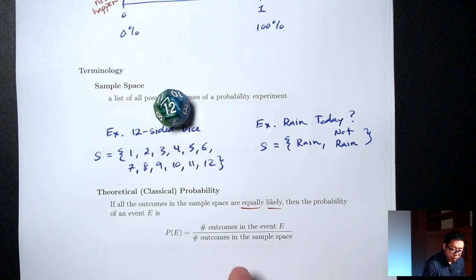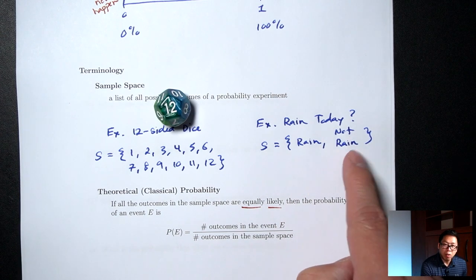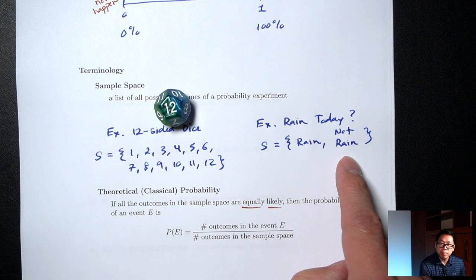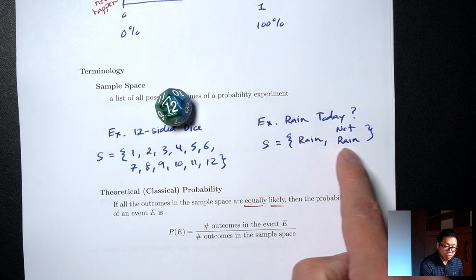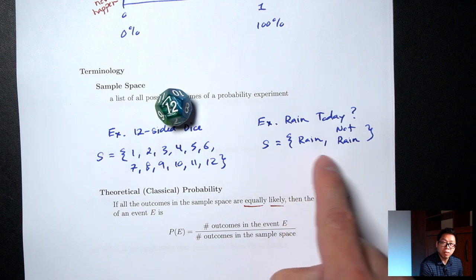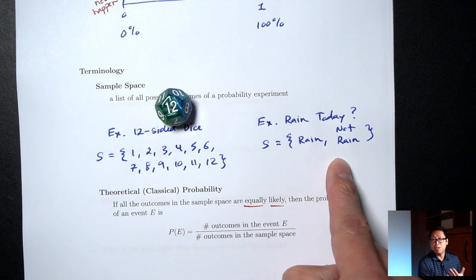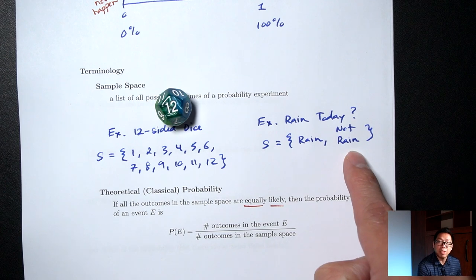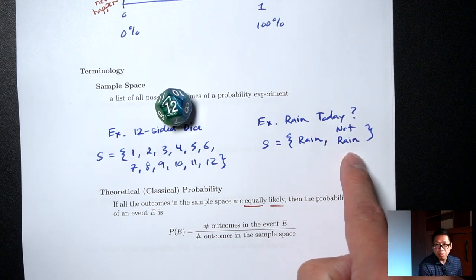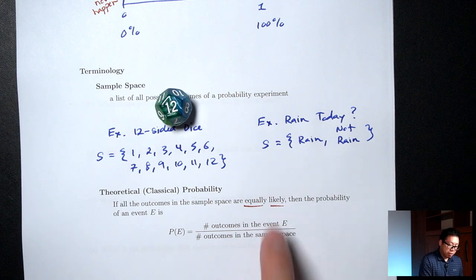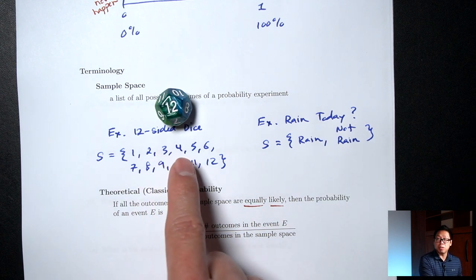However, for the rain situation — rain or not rain — are these equally likely to occur? Especially here in California during a drought, are these things equally likely? No. Here in California during a drought, 'not rain' is more likely than 'rain.' So these things are not equally likely to occur, and this formula would not apply to the rain situation. It would apply to the dice situation.